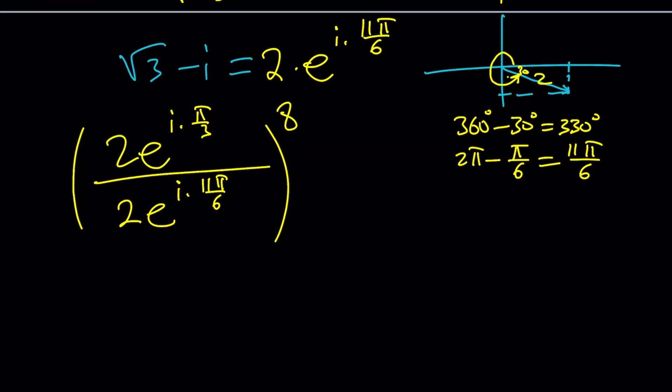Great. So the 2's cancel out. And when you divide these two exponentials, you're basically going to subtract the exponents. That's going to give you e to the power i times, if you subtract π/3, which is 2π/6, and 11π/6.